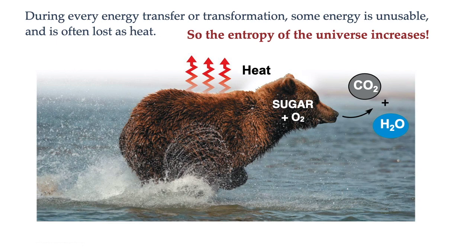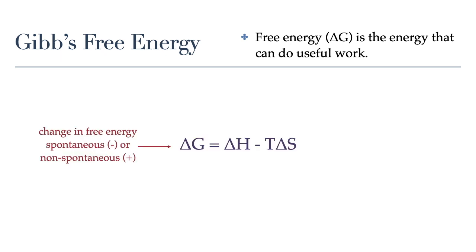Now that we've talked about energy, I'd like to focus on Gibbs free energy. In thermodynamics, Gibbs free energy is used to determine the energy in a system that can do useful work. We use this equation to calculate the change in free energy, which will let us know if the reaction will be spontaneous or not. For this course, you will not be required to do any mathematical calculations using this equation, but you do need to be familiar with it.